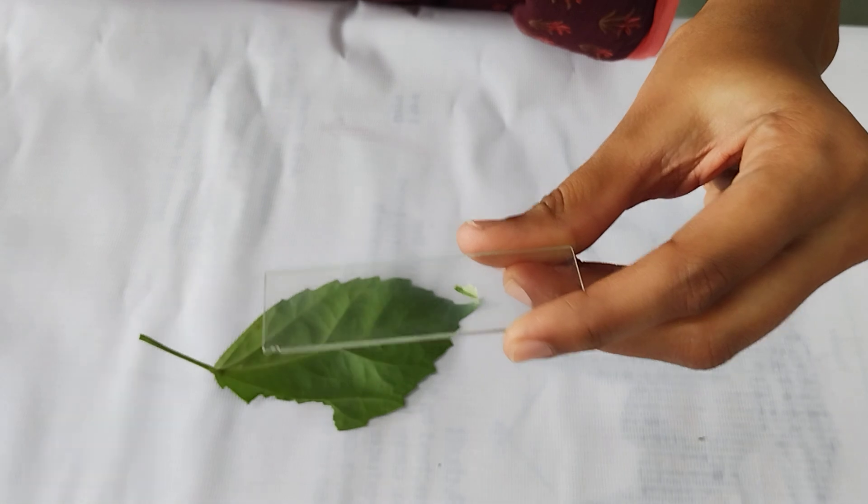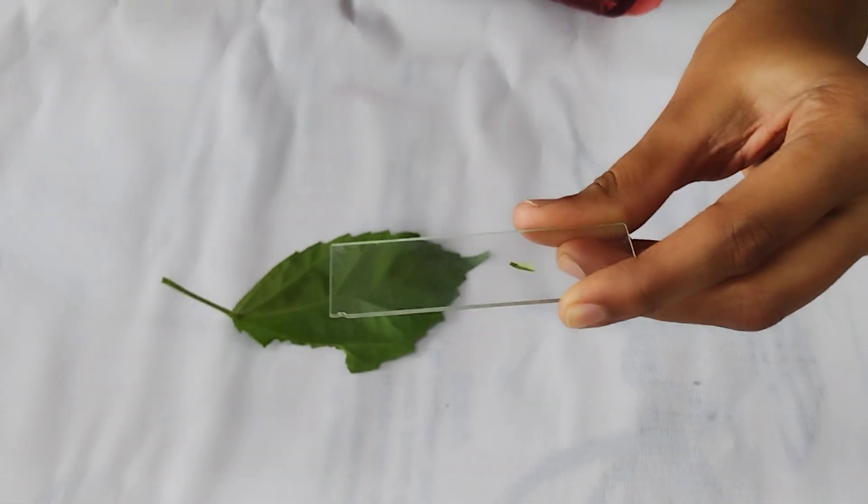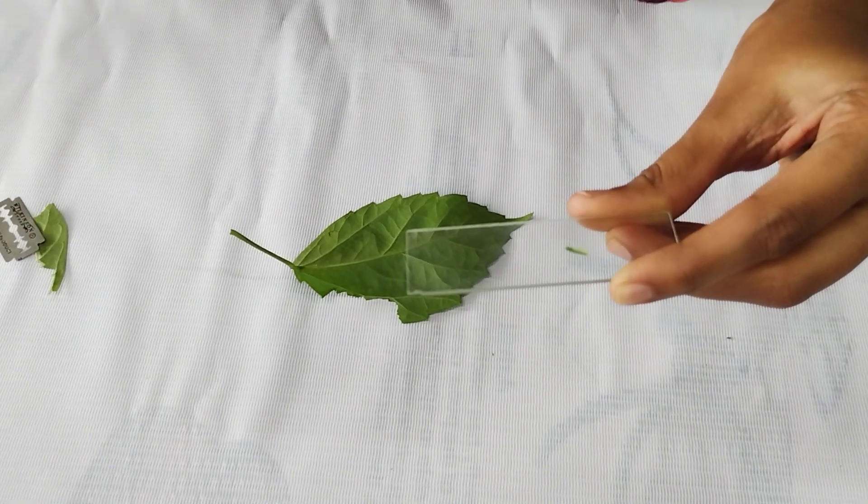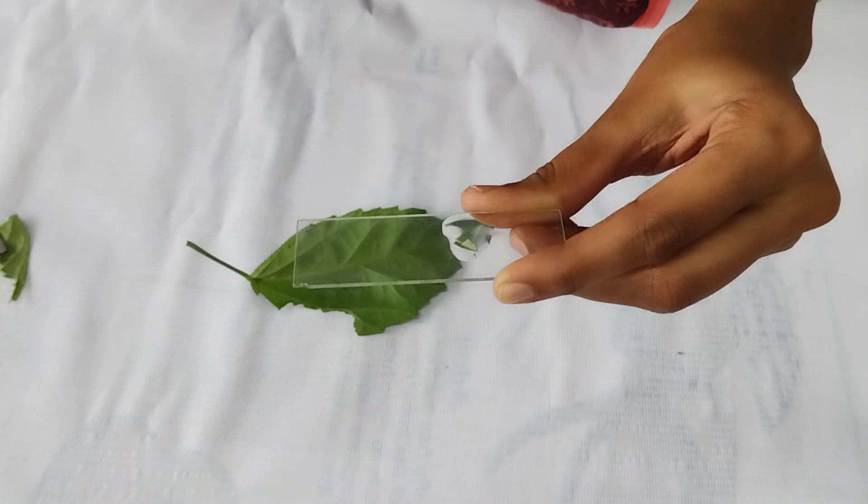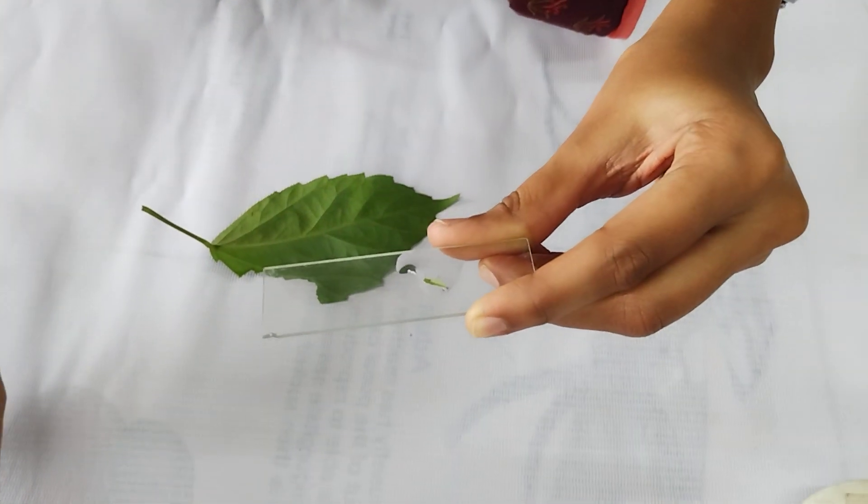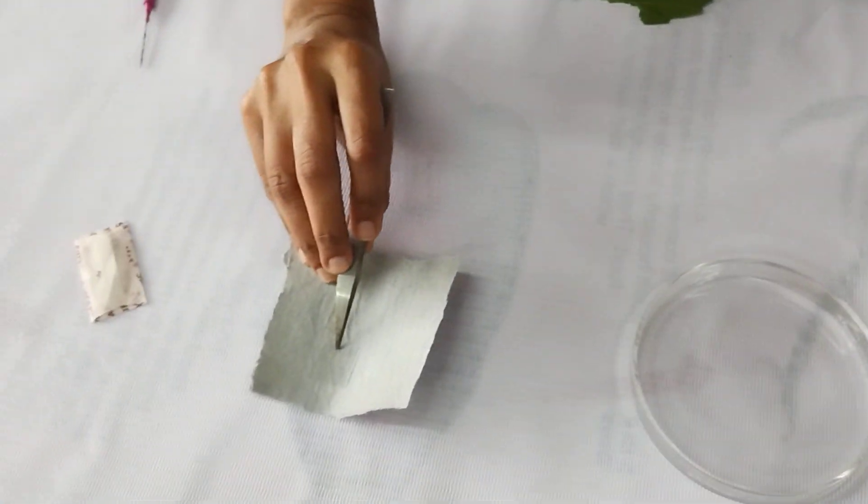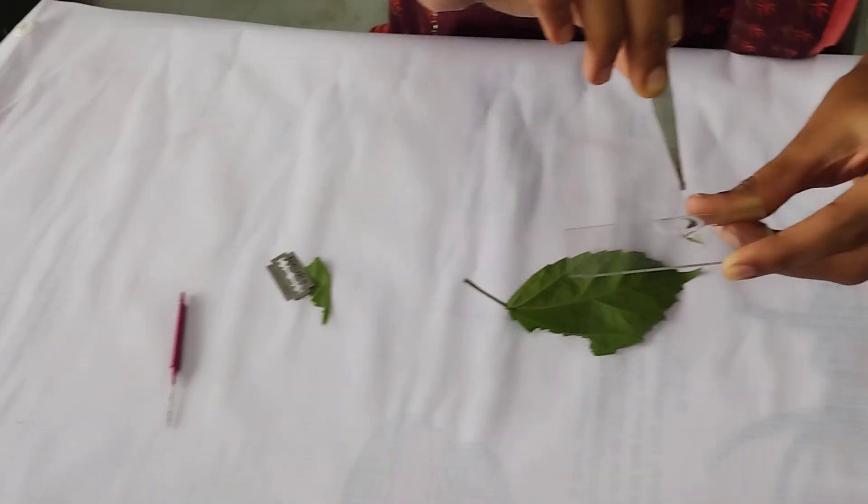Here we cut that white part, that is epidermis of the leaf. Then we are going to add a drop of distilled water on that part. After that, we have to place the cover slip on the slide.